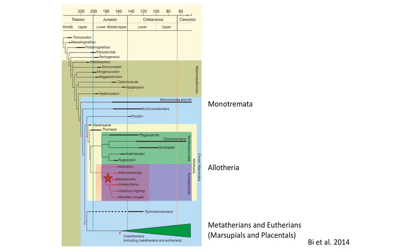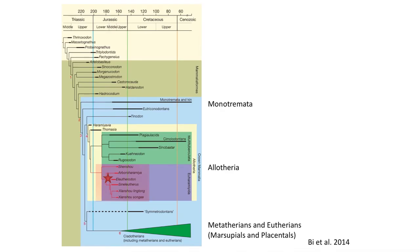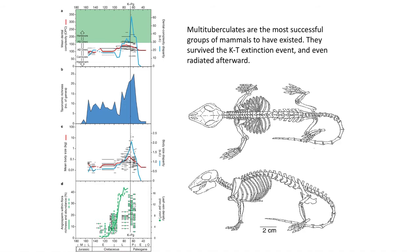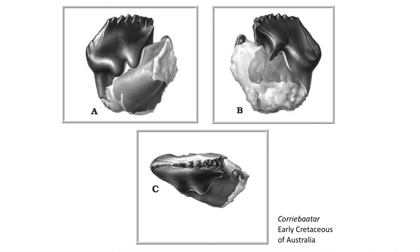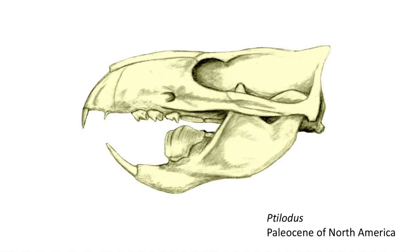The Euharamiyida are restricted to the Jurassic period. The other group of Allotheria, the Multituberculates, would go on to success in the Cretaceous and Cenozoic. The Multituberculates get their name from the many cusps that form rows on their molar-like teeth. They also developed something quite unique: a blade-like fourth lower premolar, which was used to slice the husks of seeds and nuts.